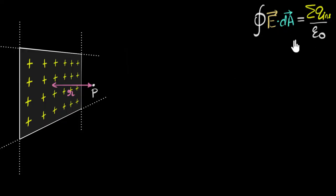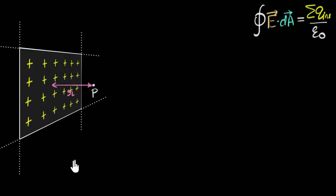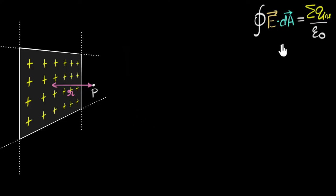If you're wondering whether we can do that for every single problem — no, we can only do it for three special cases. One is this one: the infinitely big plane. The other one you may have already seen: the infinitely big line of charge. And the other one is when we have a sphere of charge. These are the only three cases where we can use this approach.